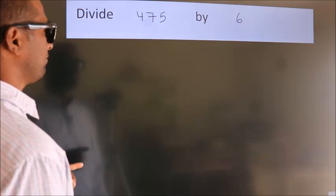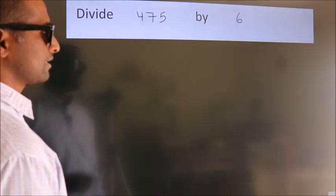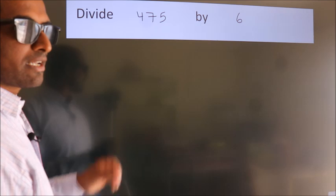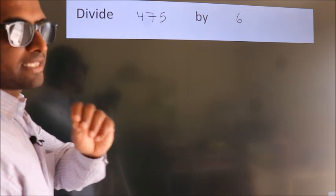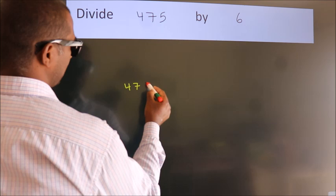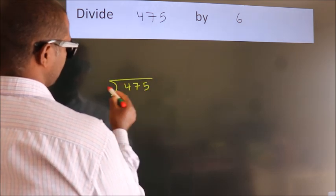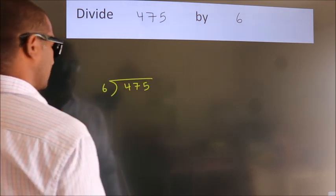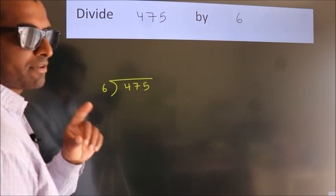Divide 475 by 6. To do this division, we should frame it in this way. 475 here, 6 here. This is your step 1.